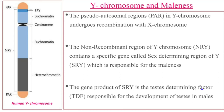In the euchromatin region, functional genes are present. This gene is called the Sex Determining Region of the Y chromosome, or SRY, which determines the sex of the individual — specifically, it determines maleness. In adult males, the SRY gene is responsible for determining maleness.